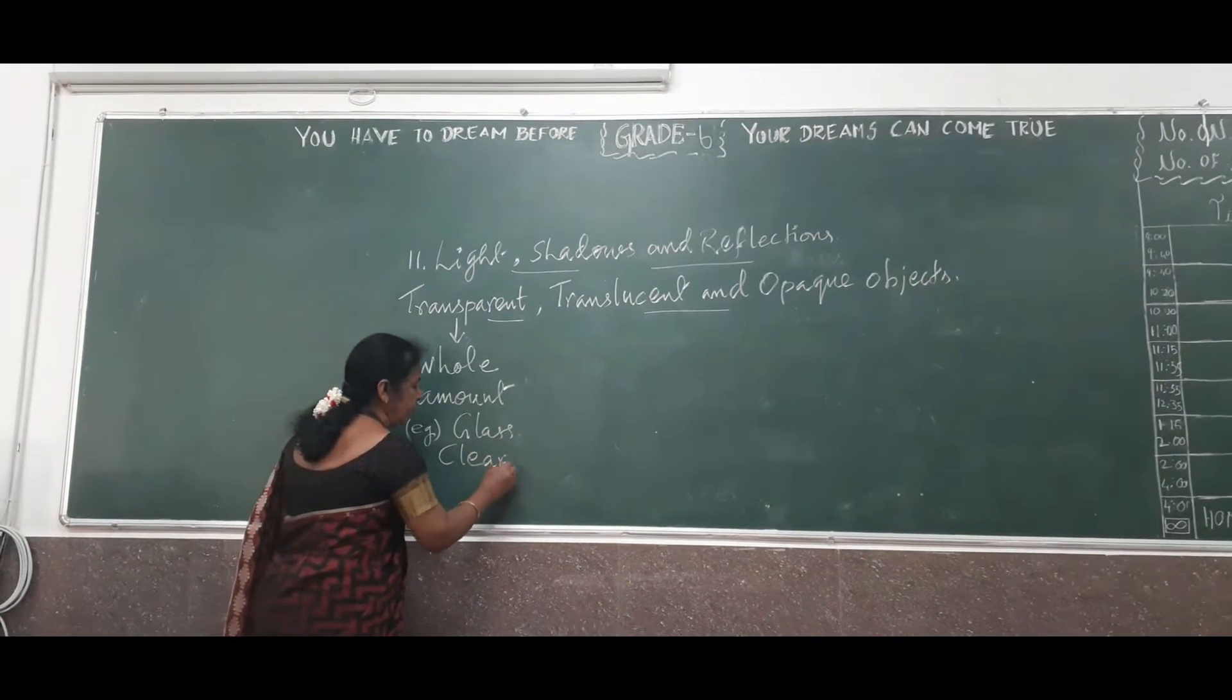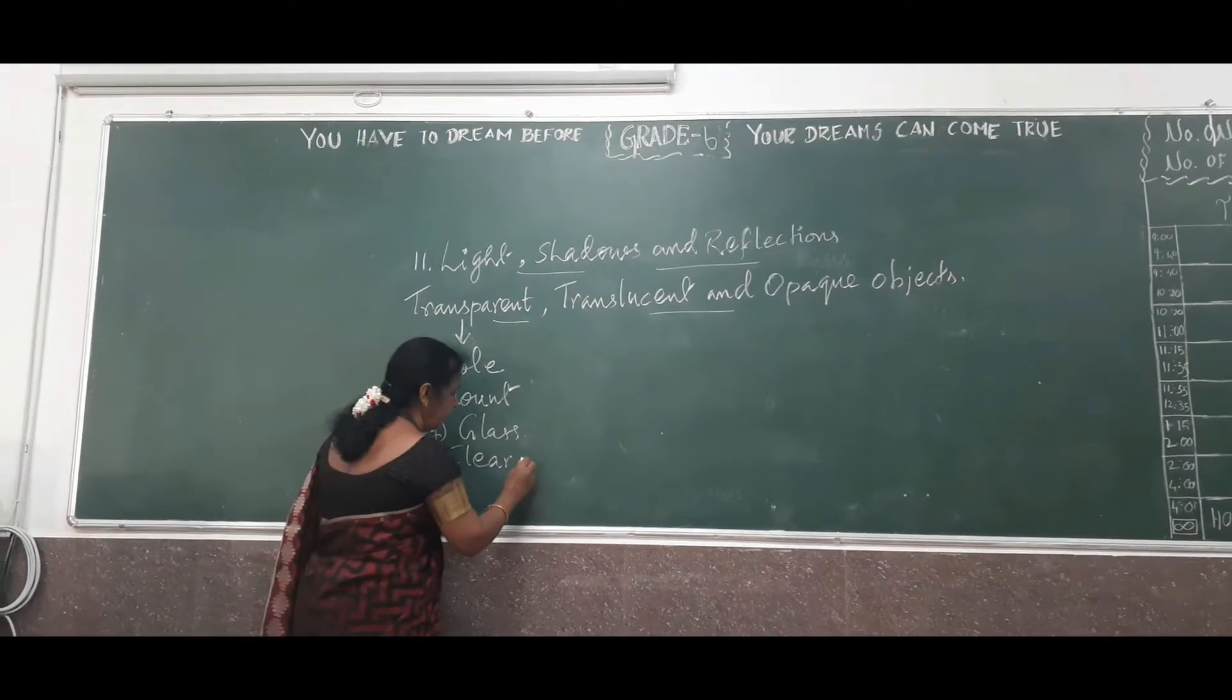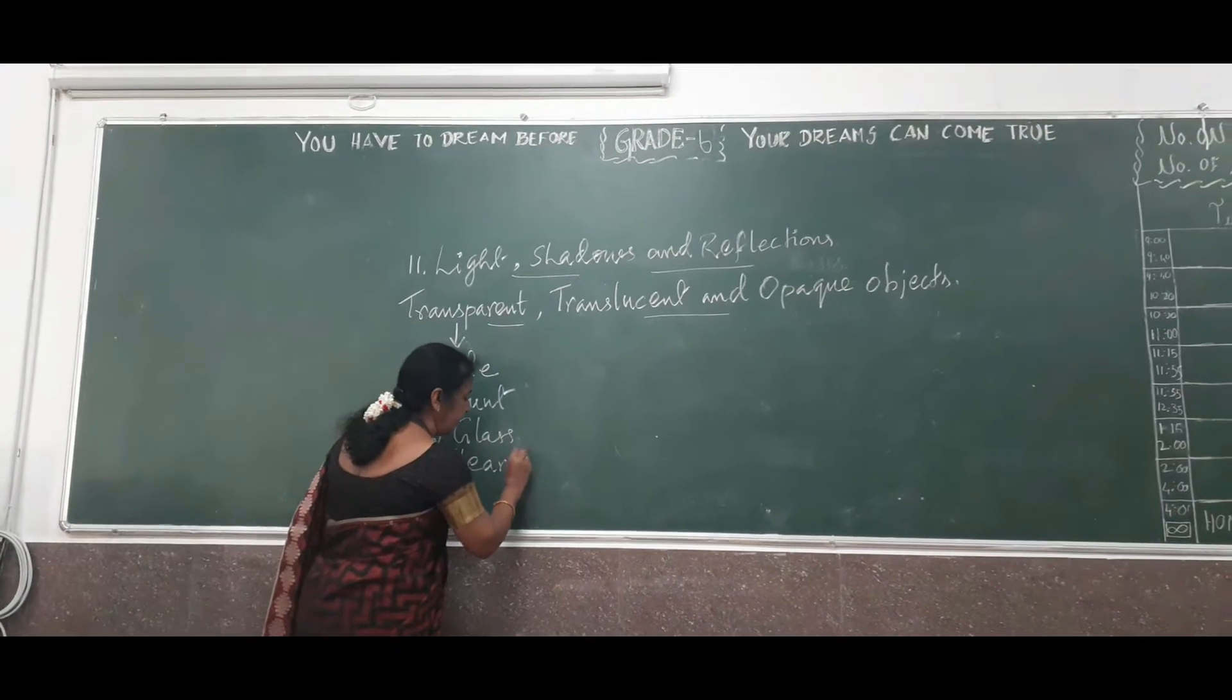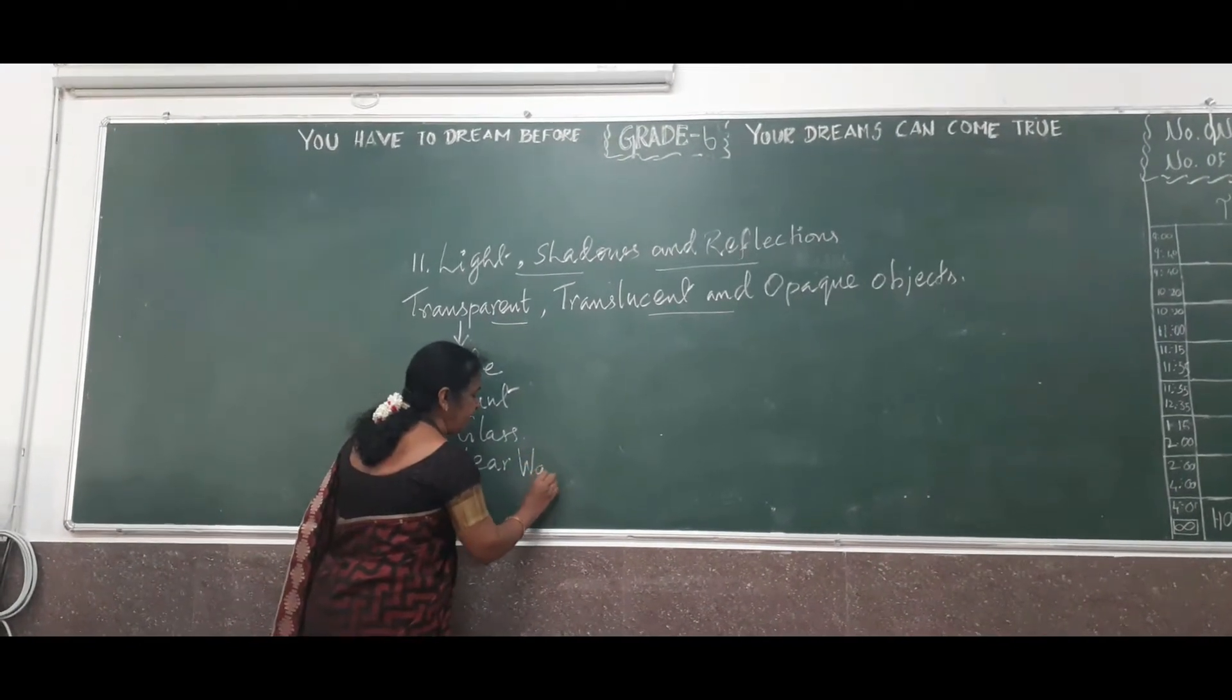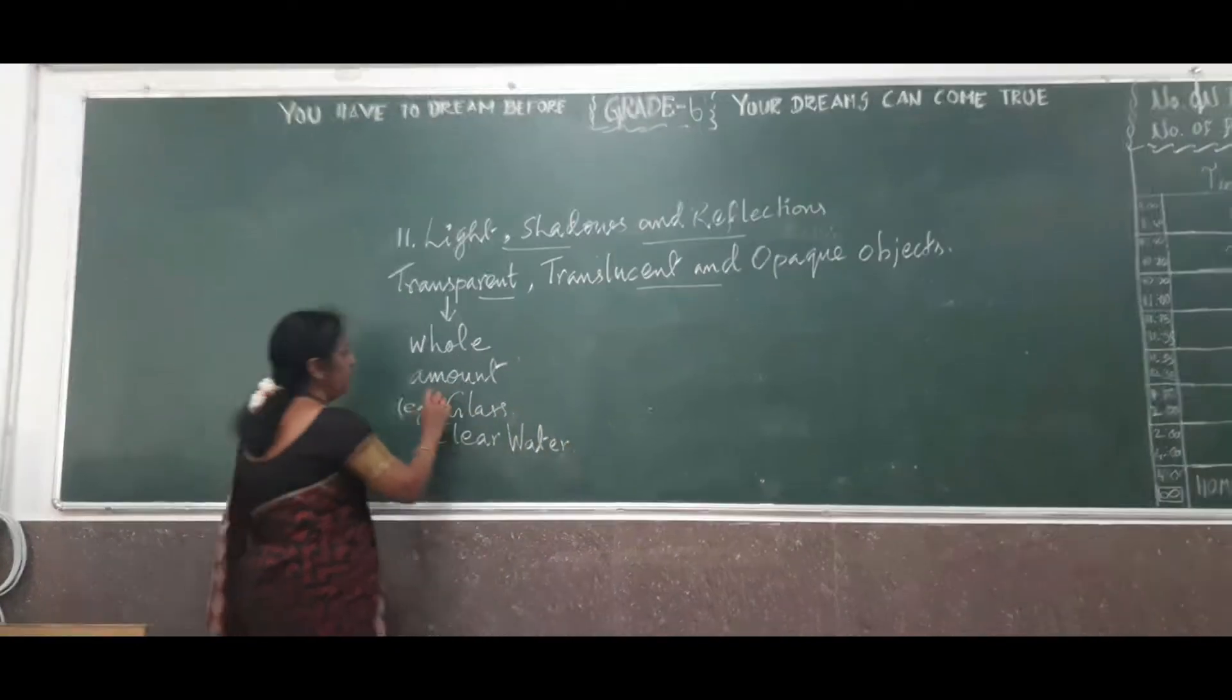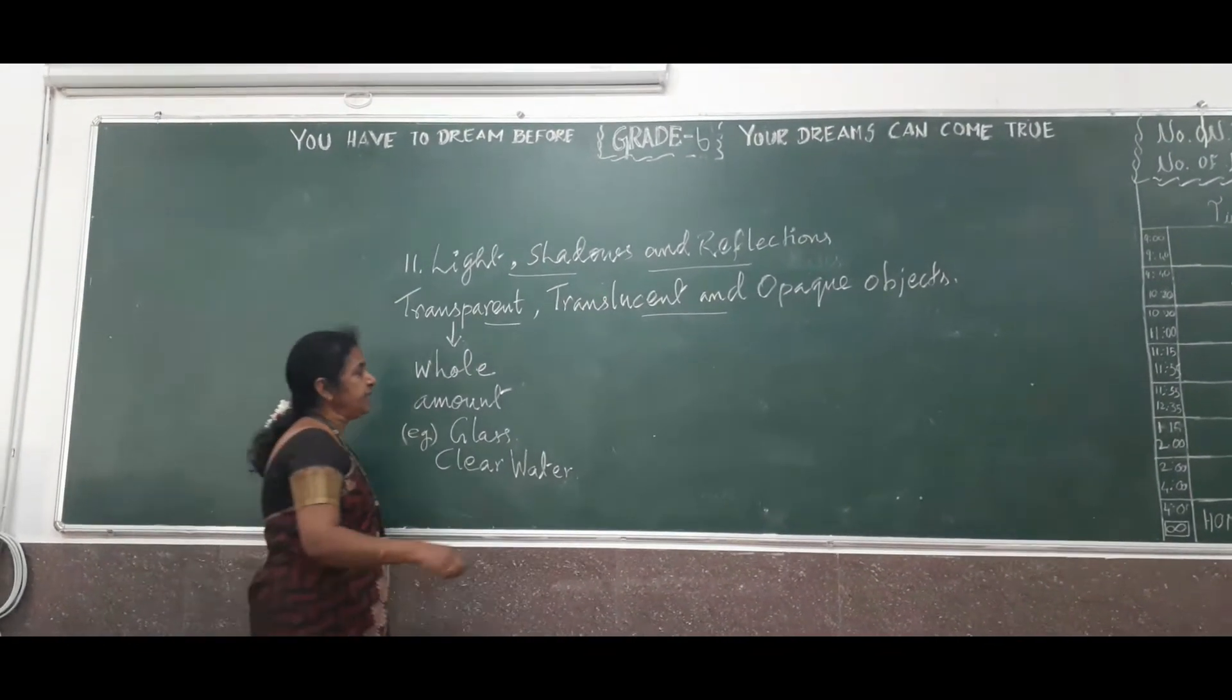You can be able to see your shadow in the clear water. So, these are the simple examples for the transparent objects.